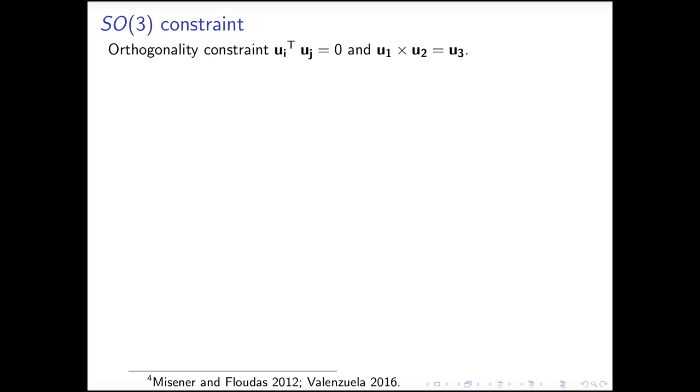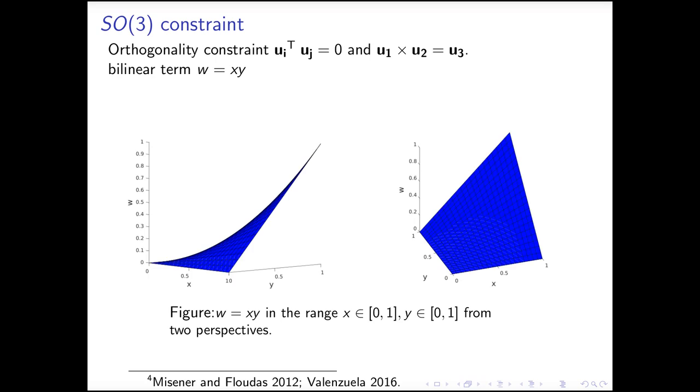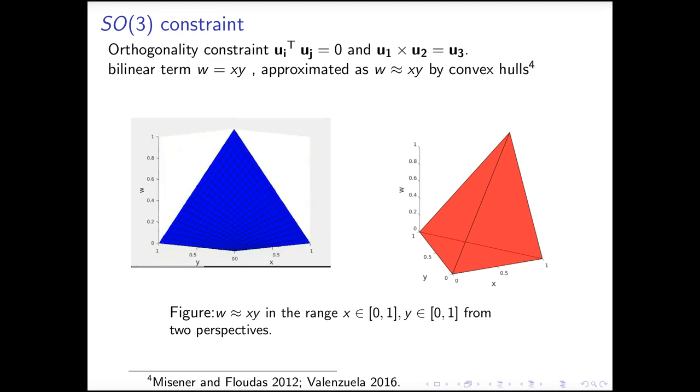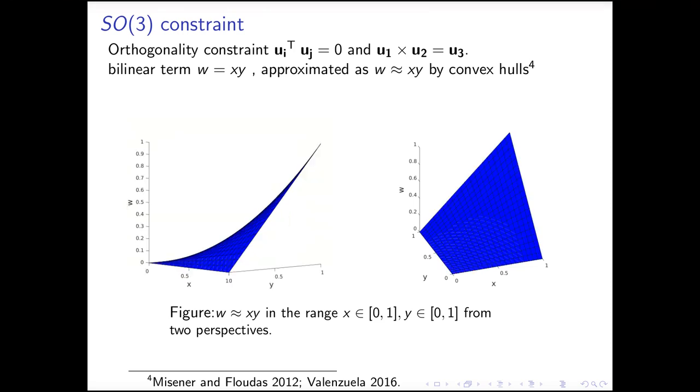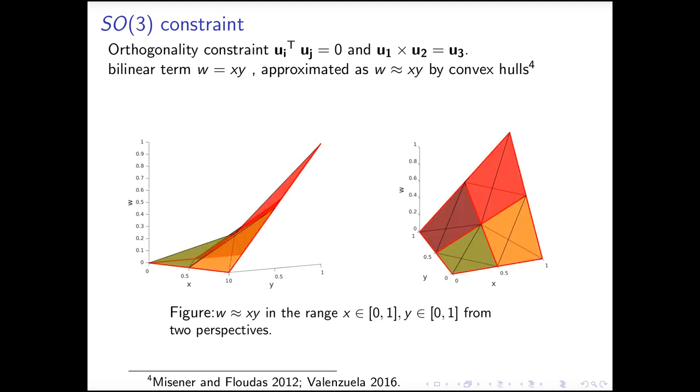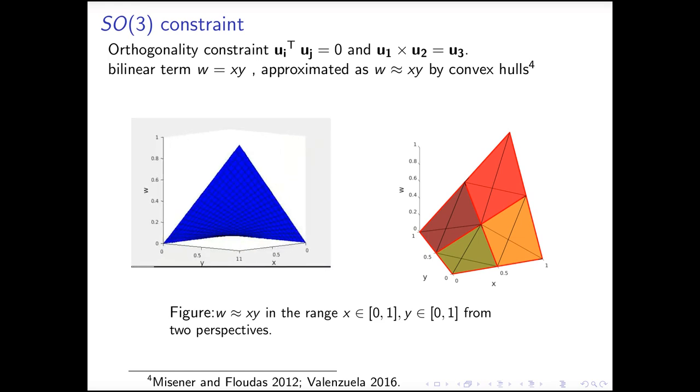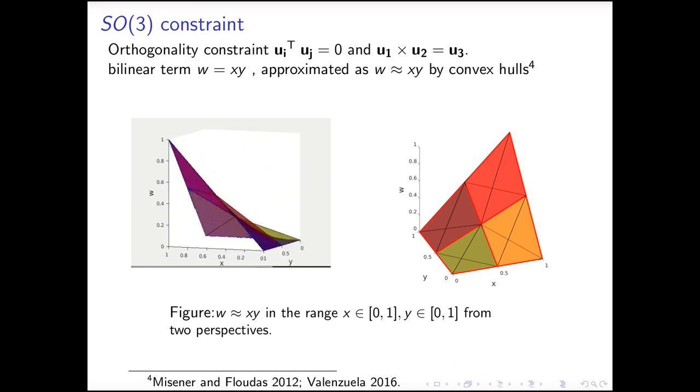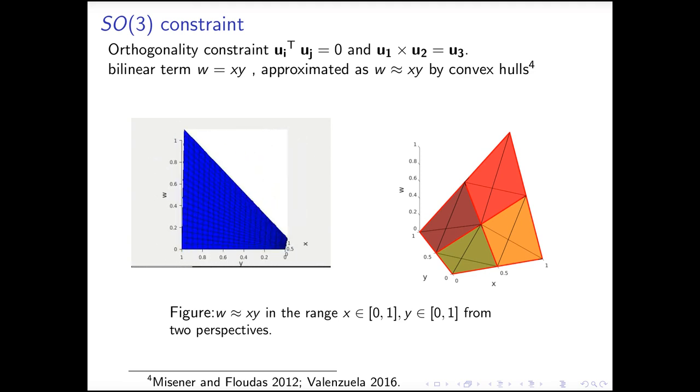For the orthogonality and cross-product constraints, they can be expressed as a summation of bilinear terms in the form w equals x times y. Here, I plot the surface of bilinear term w equals x times y from two perspectives. Although this surface is non-convex, we can compute its convex hull as a relaxation. On the left-hand side, I show the paranormal view of the non-convex surface, together with its convex hull. To obtain better relaxation with higher accuracy, we can cut the original surface into smaller pieces, and compute the convex hull of each small piece. So, we have relaxed the non-convex SO(3) constraints as unions of convex constraints.